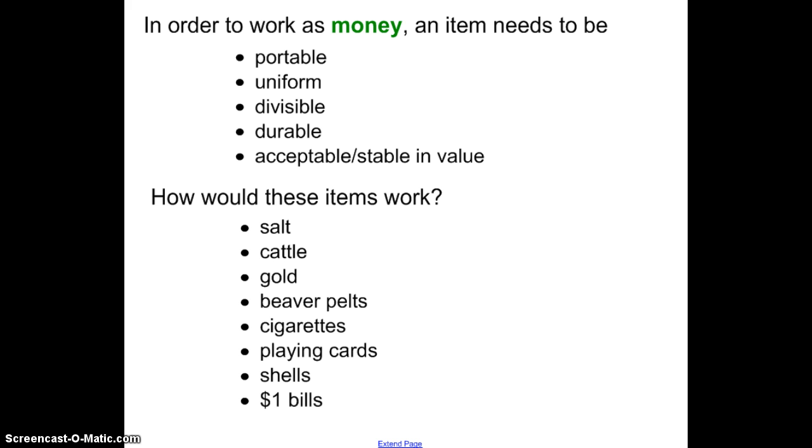For example, in order to work as money, an item has to be portable. That means you have to be able to carry it around. It has to be uniform, meaning each piece of it looks the same. Gold worked pretty well because they could make gold into coins that were the same size and weight. If you had different pieces or sizes of gold, they wouldn't work as well. It has to be divisible.